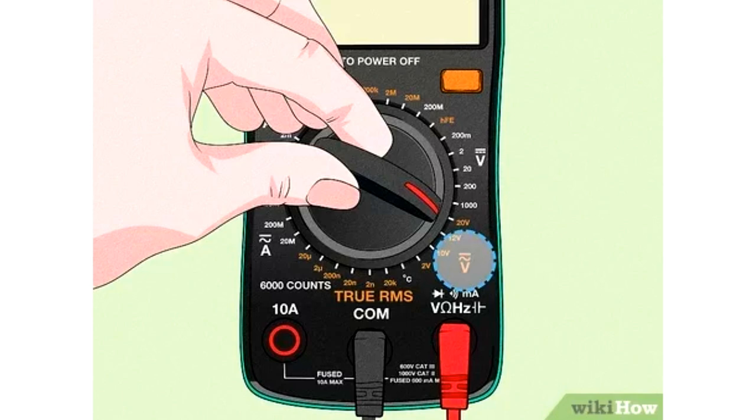AC, or alternating current, voltage is used to measure things you might find around the house, like wall sockets, microwaves, and other home electrical appliances.